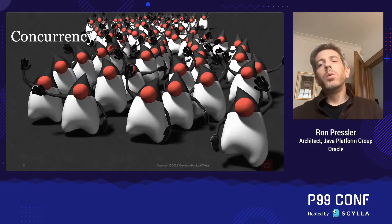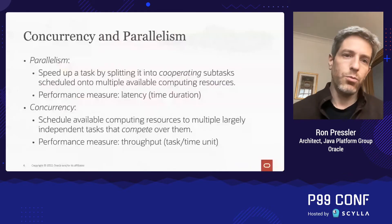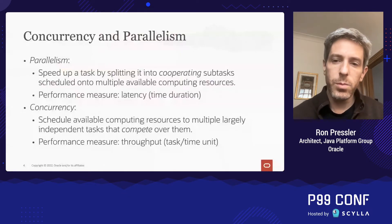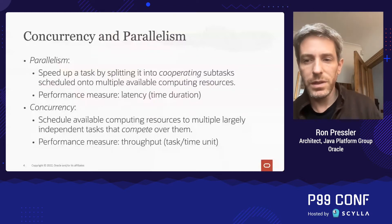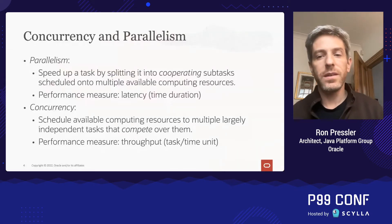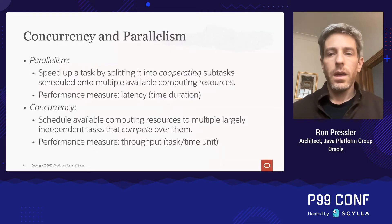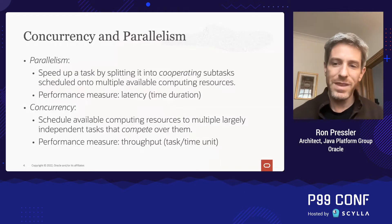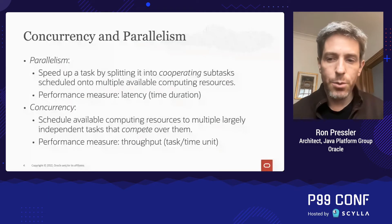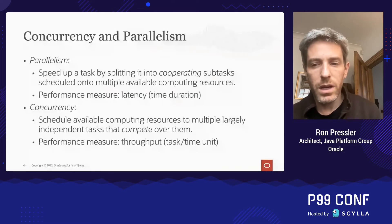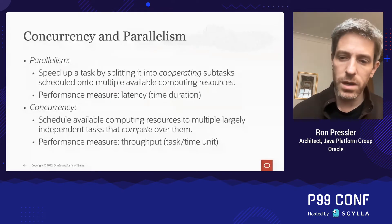Parallelism is the problem of accelerating the performance of a task — that is, reducing its latency — by splitting it down into multiple sub-tasks and employing multiple processing resources to cooperate on completing them. The source of the sub-tasks is internal; they're created by the parallel algorithm. Concurrency, in contrast, is a problem of scheduling to some set of resources many largely independent tasks that arrive from the outside, and we're mostly interested in throughput, or how many of these we can complete per time unit. Servers are a canonical example of concurrent programs.